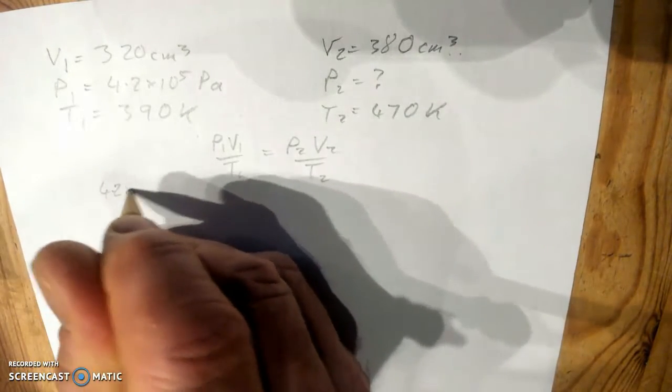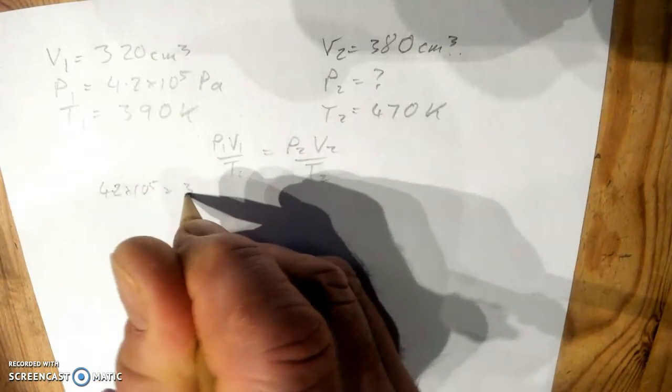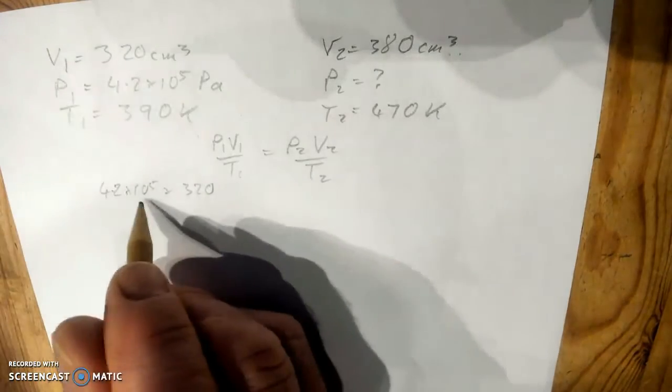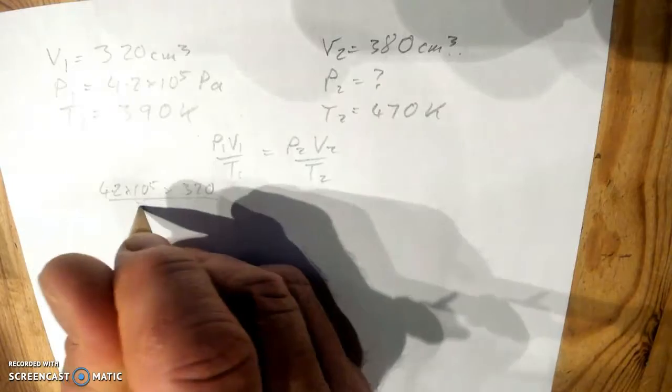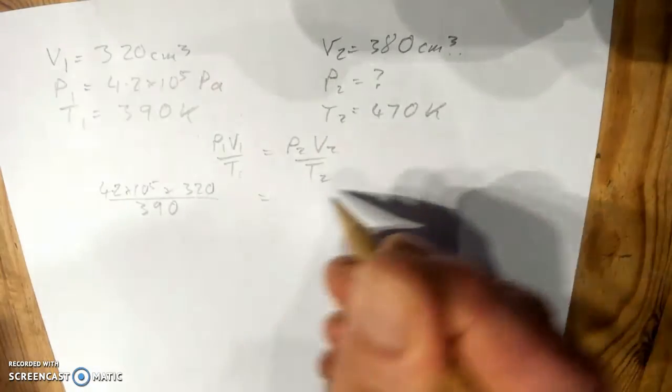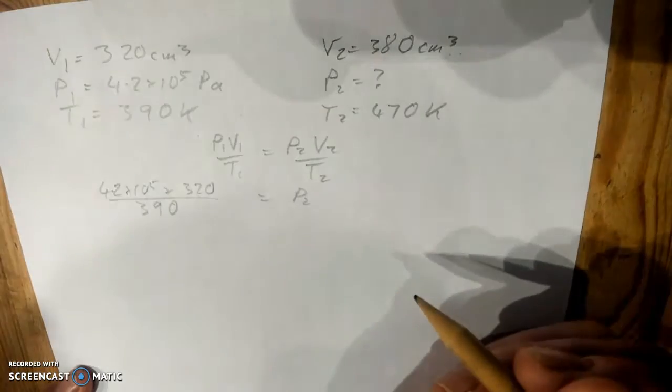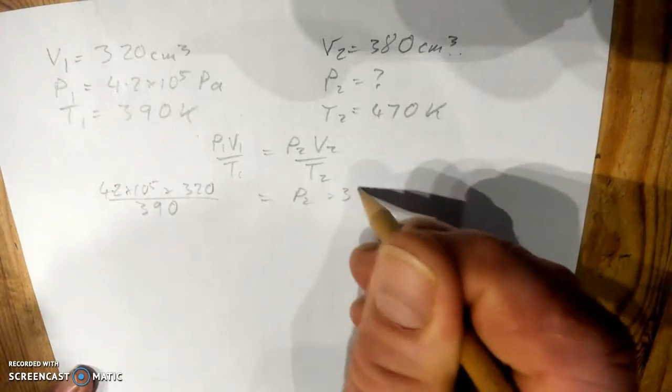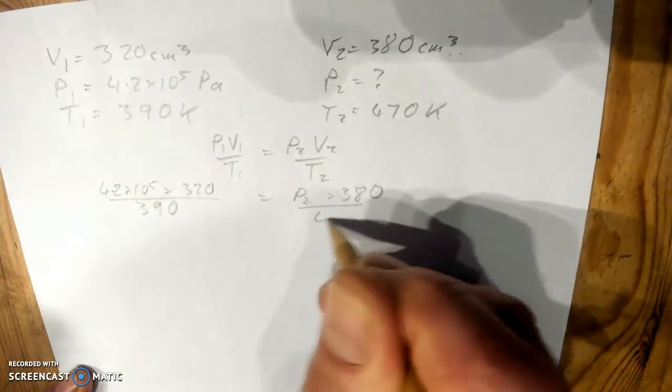So we've got 4.2 times 10 to the power of 5, you can't rush this, there's a lot of information to put down, it's the most complicated equation you're going to do in National 5, over 390 equals, P2 is what we're trying to find, so we'll leave that as a letter, times 380 divided by 470.